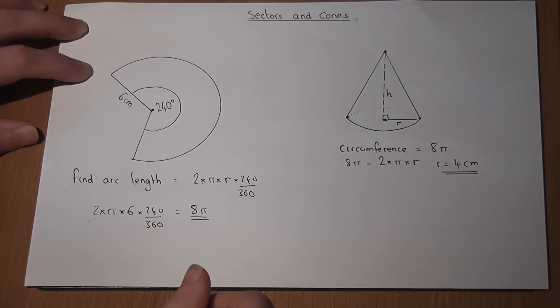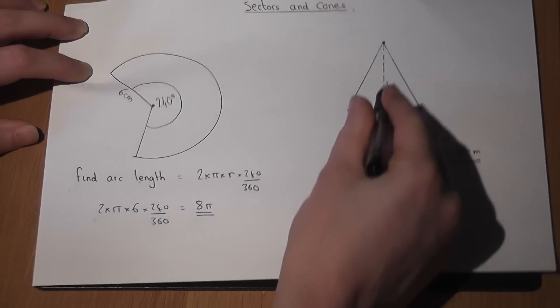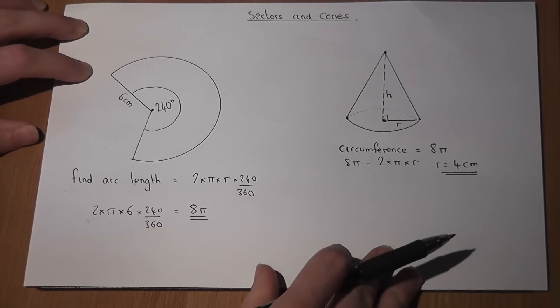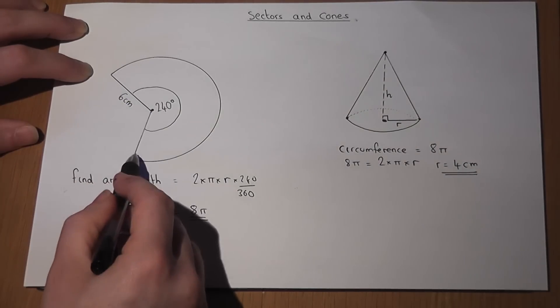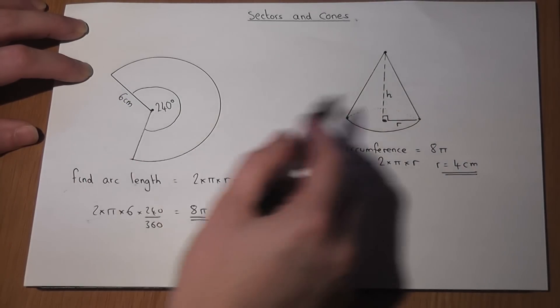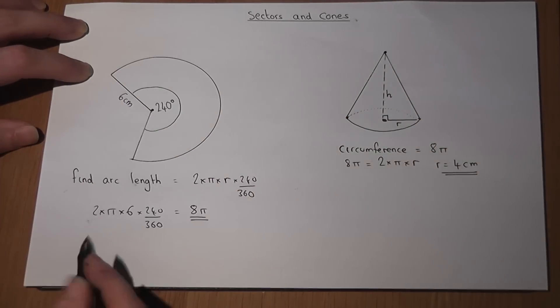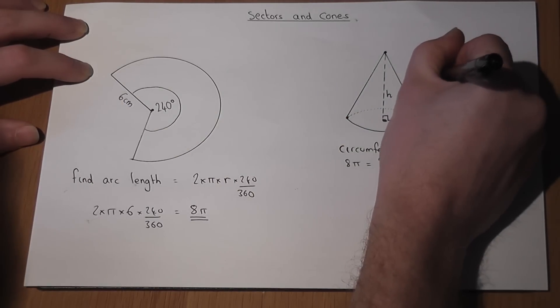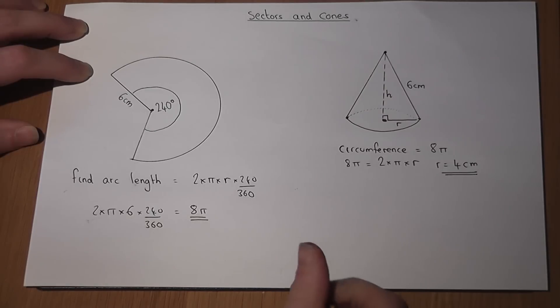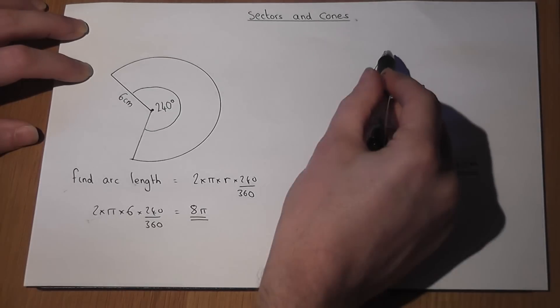Now then, I can also find the height of the cone for the following reason. These two edges here joined to make the slant of the cone. So that 6 centimeters must be the slant height of the cone. So r is 4 and that is 6.